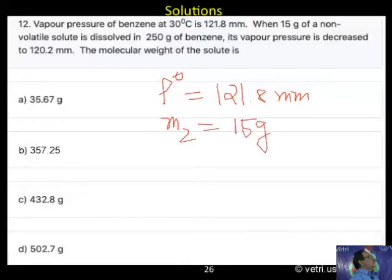Then, it is in 250 grams of benzene. Weight of M1 is given: 250 grams of benzene. That is, solvent.